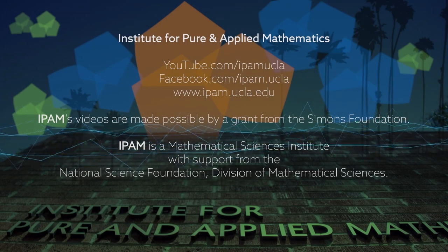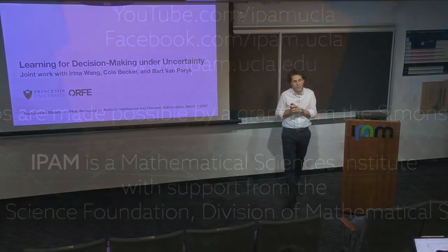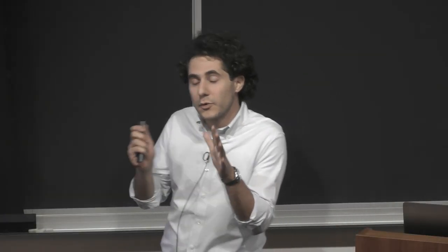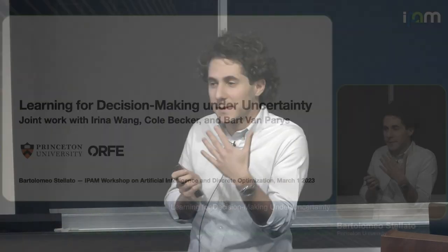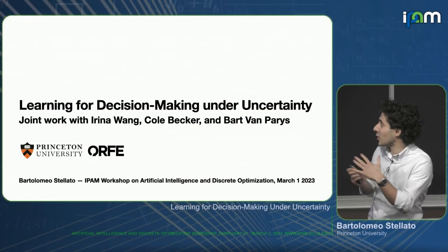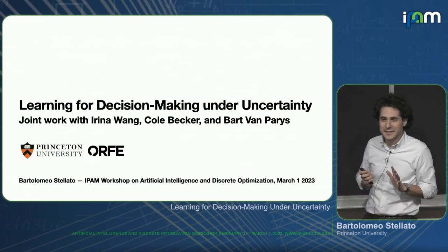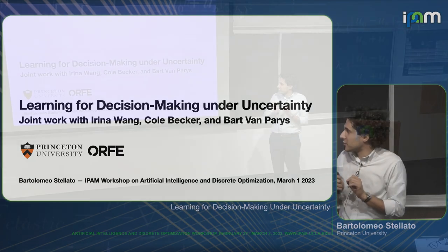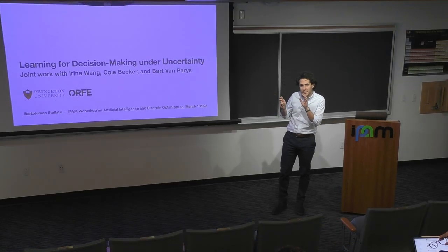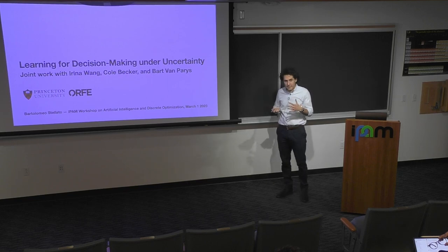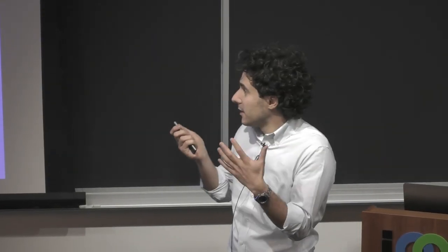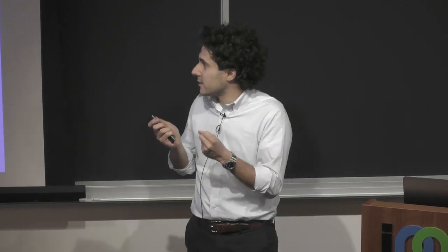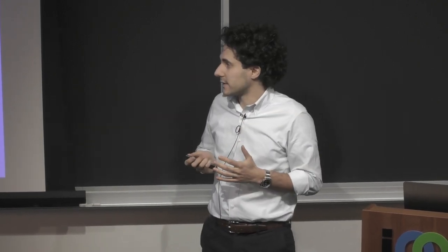I'm really excited to talk about some of the work that I've been doing with my students. I've been doing lots of work on real-time optimization and predictive control in the past, in terms of speeding up optimization algorithms, and lots of you already talked about this topic, but I would like to introduce you to a slightly different topic more related to uncertainty: how can we use machine learning models to build better decision-making tools when we face uncertainty?